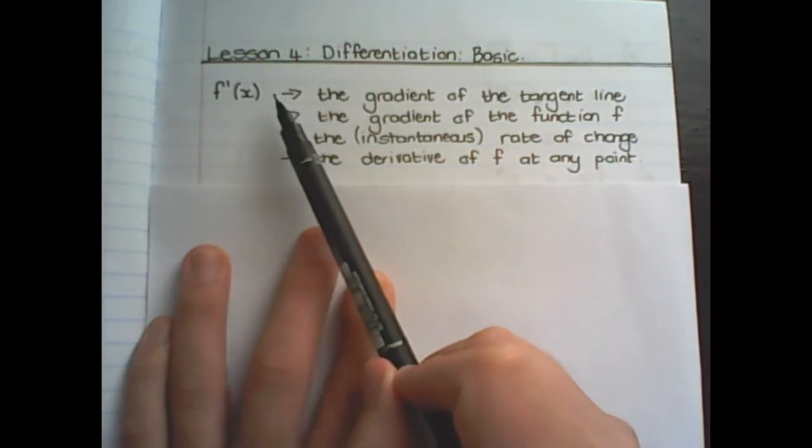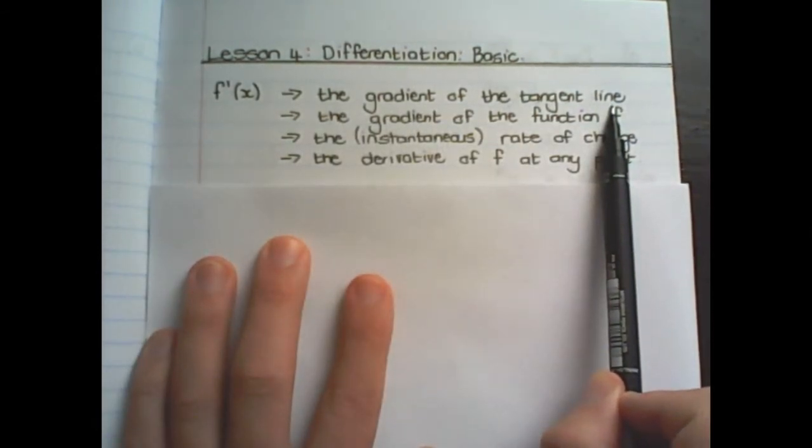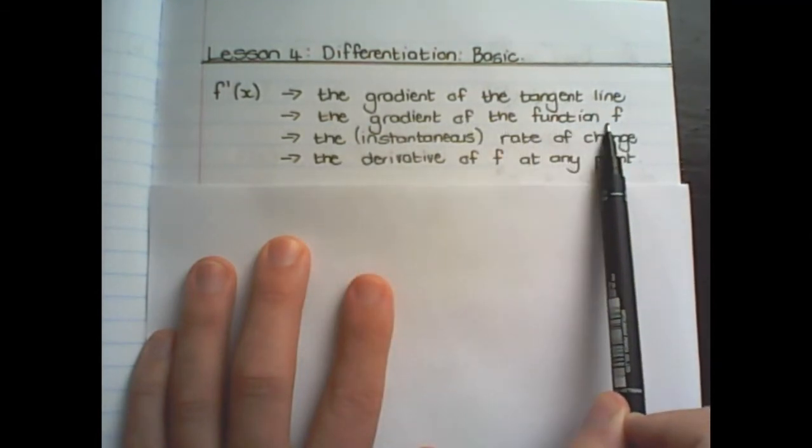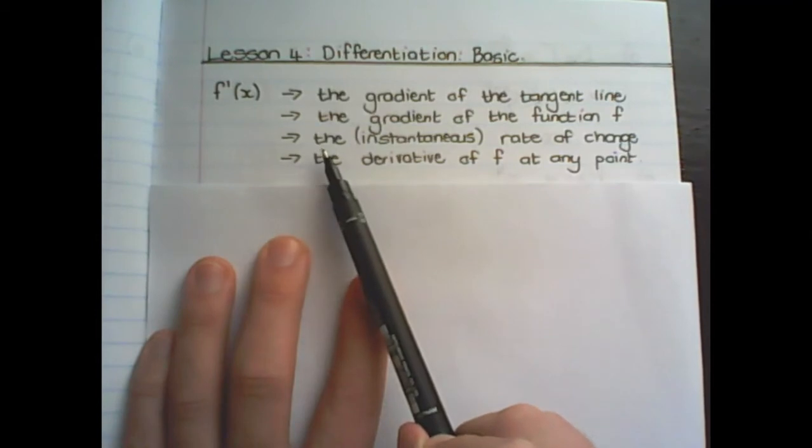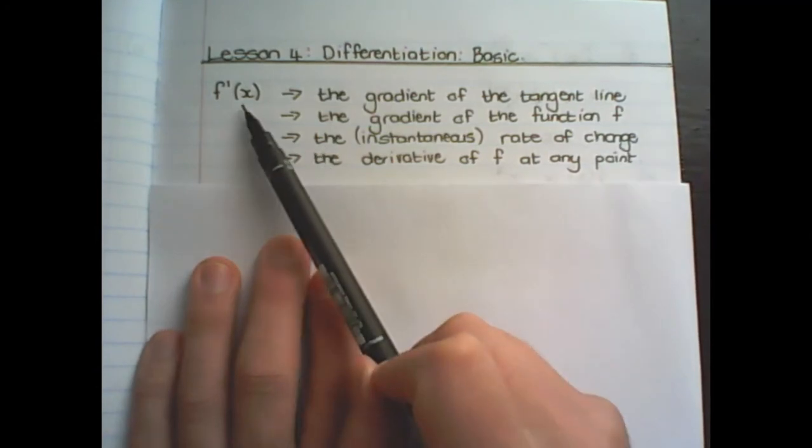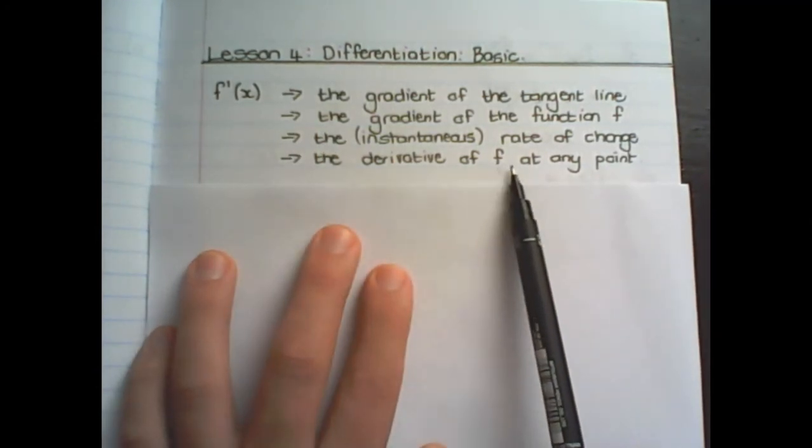f' is the notation that we use for the gradient of a tangent to a line. It also represents the gradient of the function f. It's also the same notation for the instantaneous rate of change, or just the rate of change.